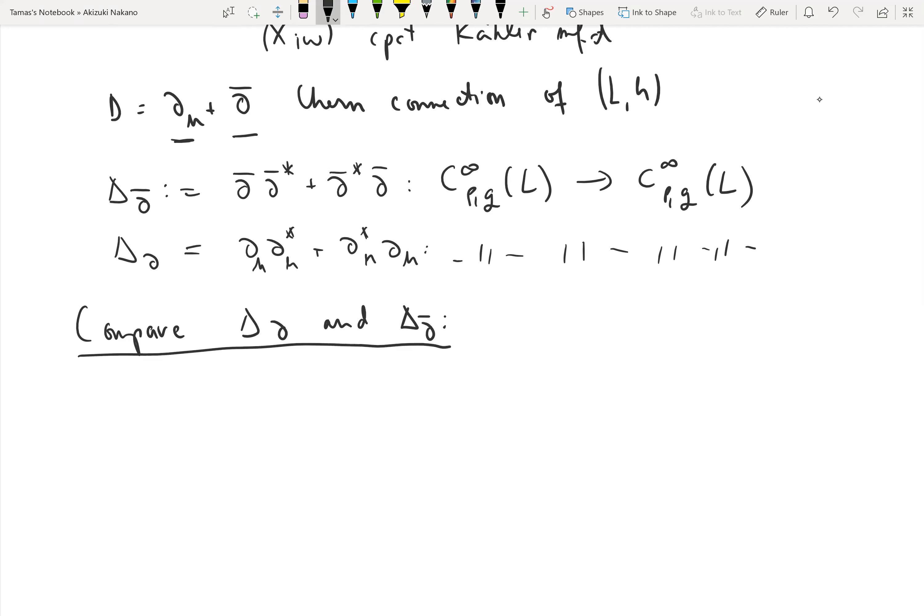Before I can show you what that is, let's recall three more things. If beta is a (1,1)-form on X, then beta induces by wedging an operator from p,q L-valued forms to (p+1,q+1) forms. Sometimes we will forget the wedge and identify beta with the operator it induces.